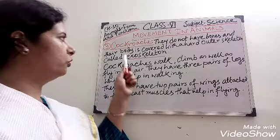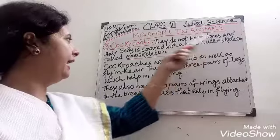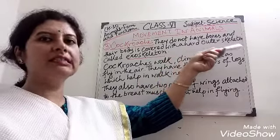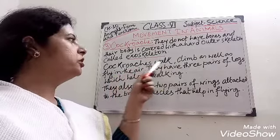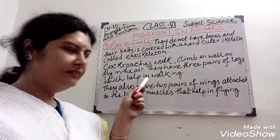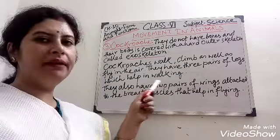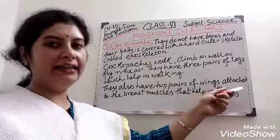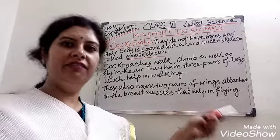The third animal is the cockroach. Cockroaches do not have bones and their body is covered with a hard outer skeleton called an exoskeleton. Cockroaches walk, climb, and can also fly in the air. They have three pairs of legs which help in walking, and two pairs of wings attached to the breast muscles that help in flying.